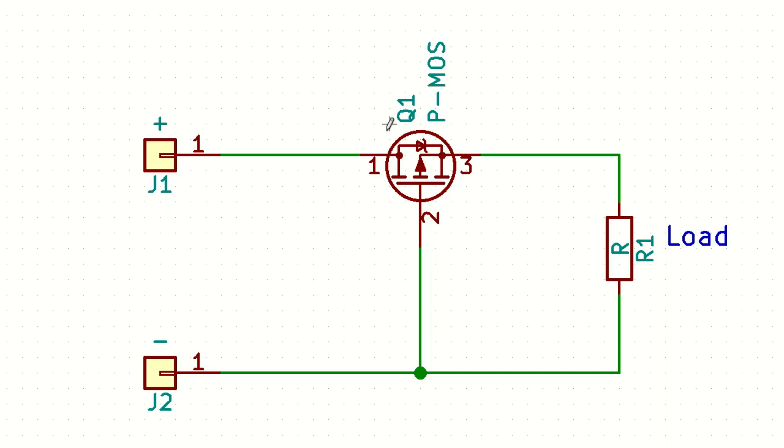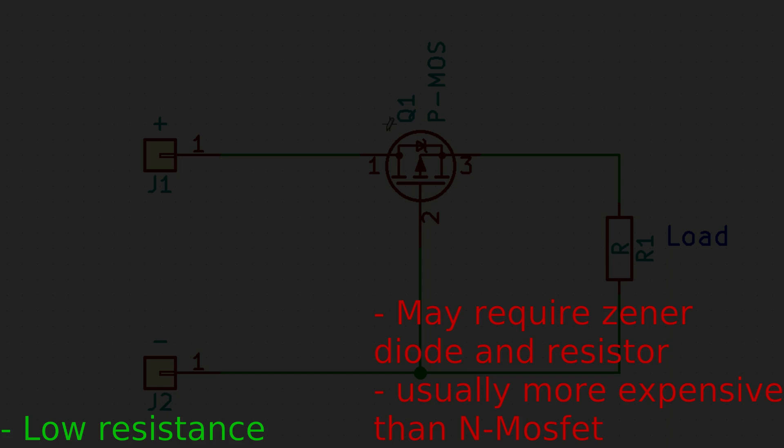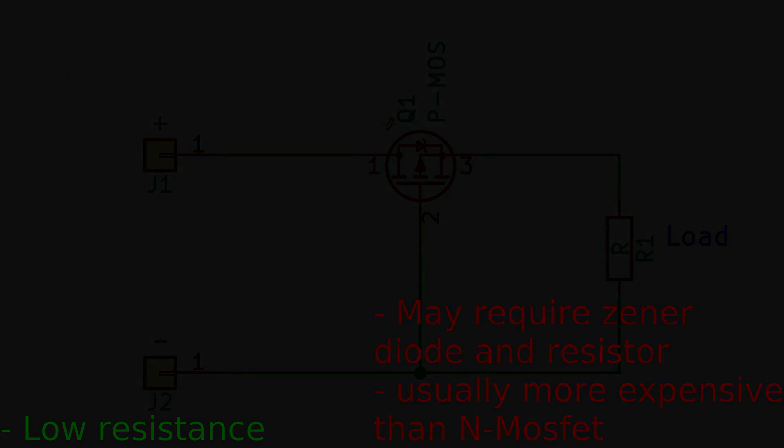The good sides it has a low RDS on which means low resistance. It's still slightly higher than N channel MOSFET but it's not too bad. And the bad sides it might require Zener diode to clamp reverse voltage and they're usually more expensive than N channel MOSFET.